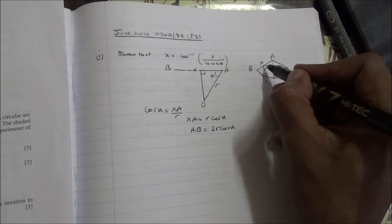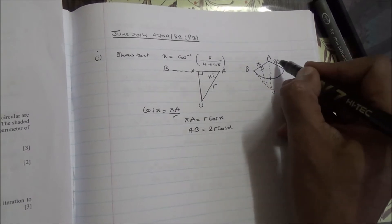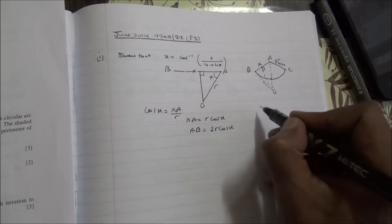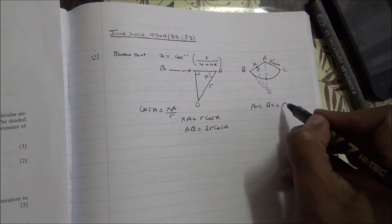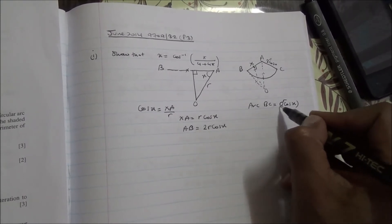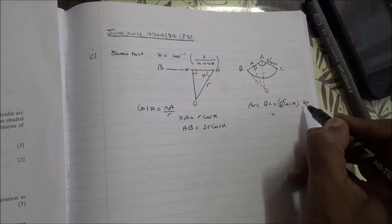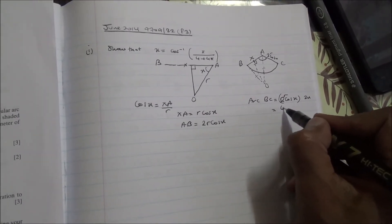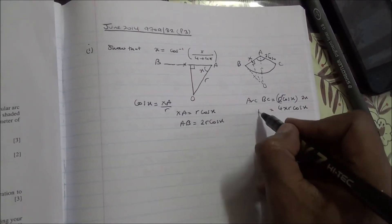This part here is X, so this is 2R cos of X, and this is 2R cos of X. What is the arc BC? Arc BC is simply the radius, and the radius is 2R cos of X, times the angle, here 2X. So we have the angle is going to be 2X times X, which is 4X cos of X. That's the arc BC.